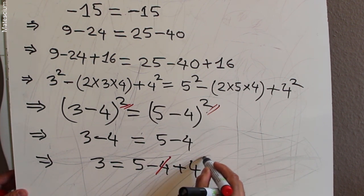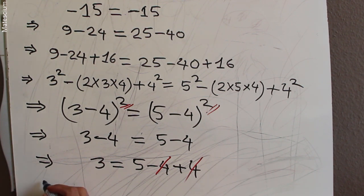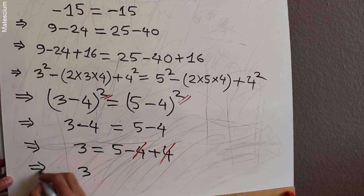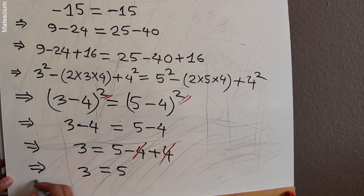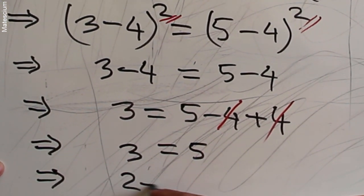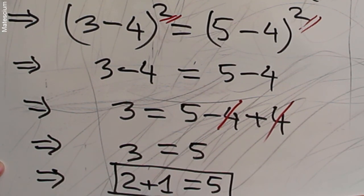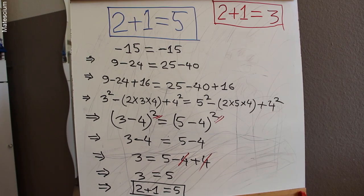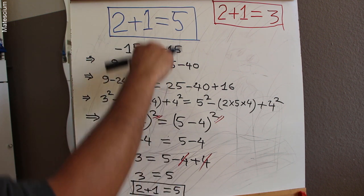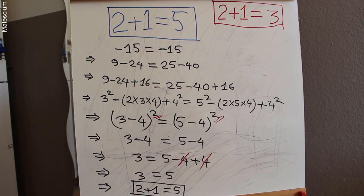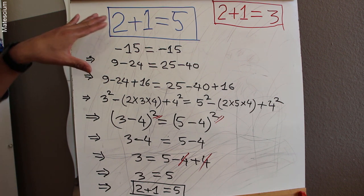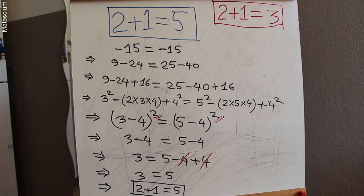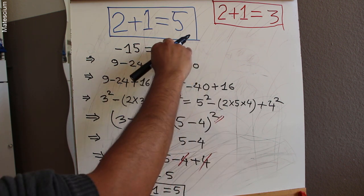The minus 4 and plus 4 cancel each other on the right-hand side, leaving just 3 on the left and 5 on the right. Since 3 can be written as 2 plus 1, we get 2 plus 1 equals 5. You might say — how is this possible? Well, I found this interesting mathematical calculation and I'm sure you'll enjoy it.